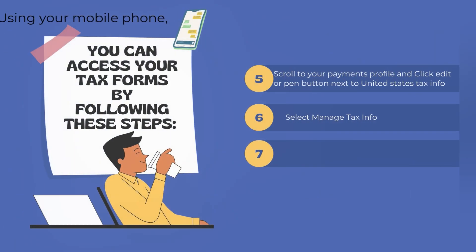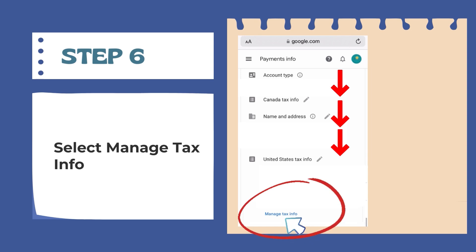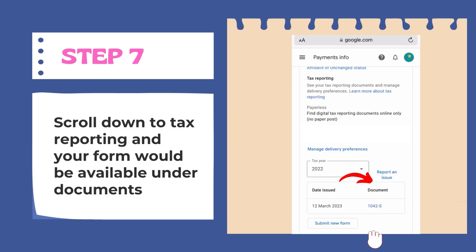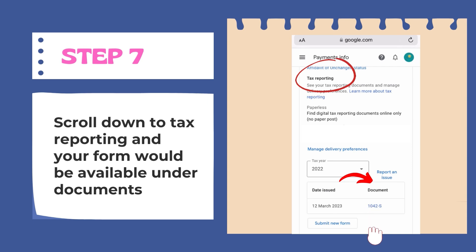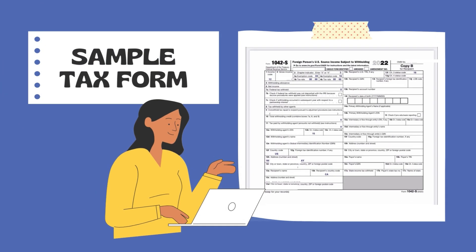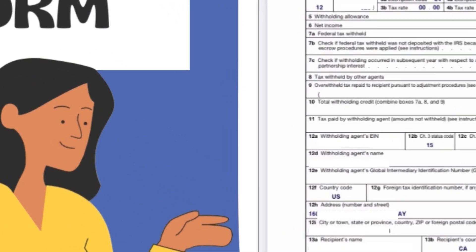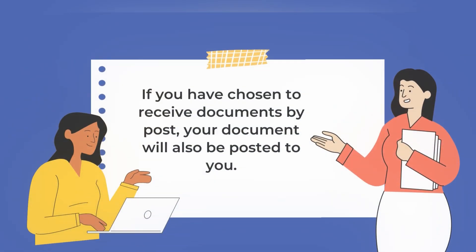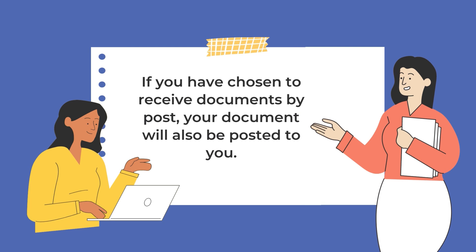Step number six: select Manage Tax Information. And the last step, number seven: scroll down to Tax Reporting and your form will be available under Documents. Here is a sample tax form. If you have chosen to receive documents by post, your document will also be posted to you.